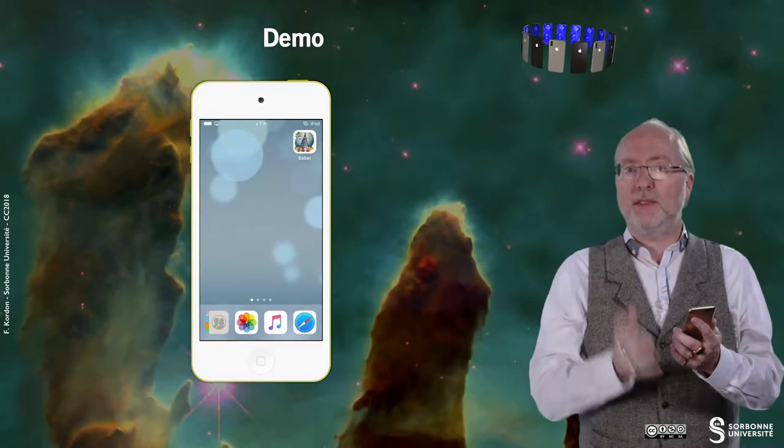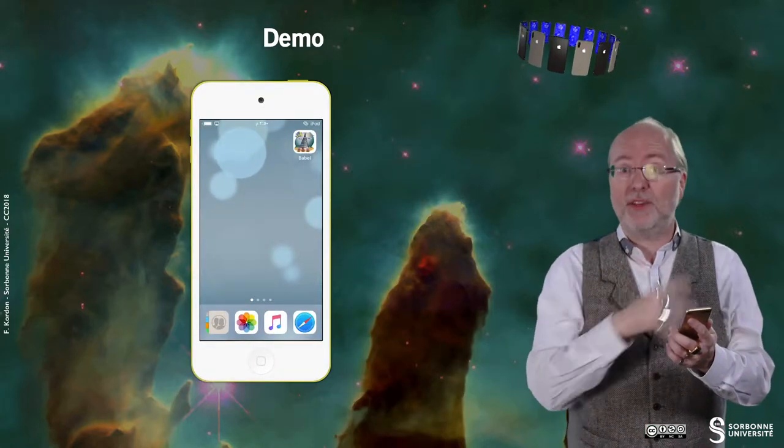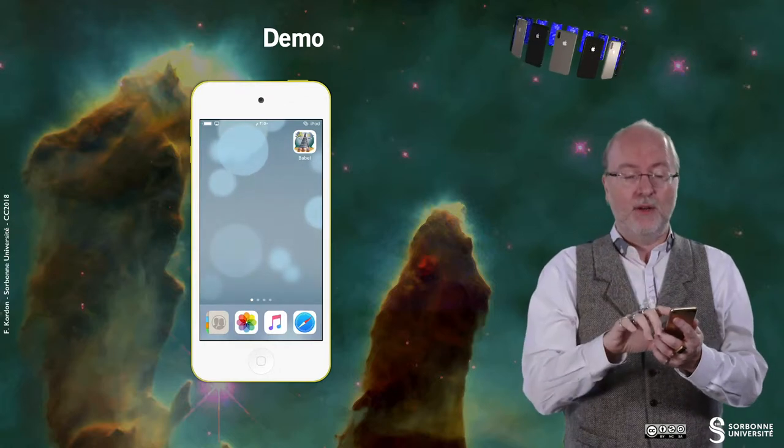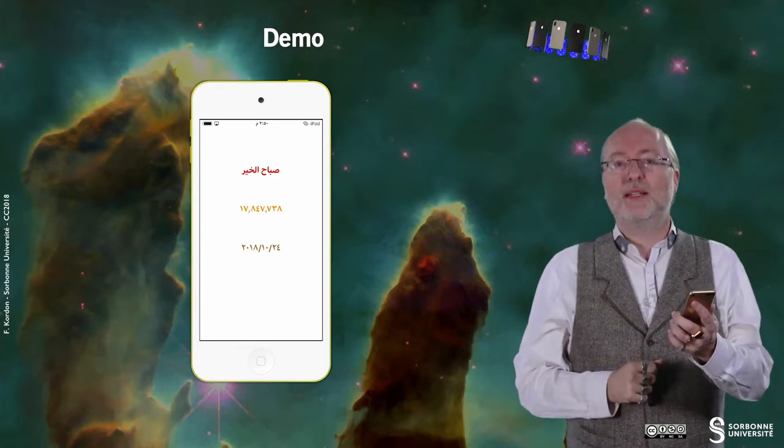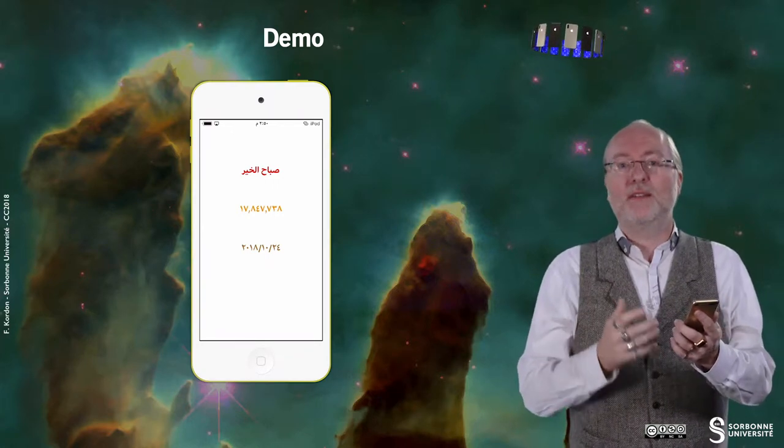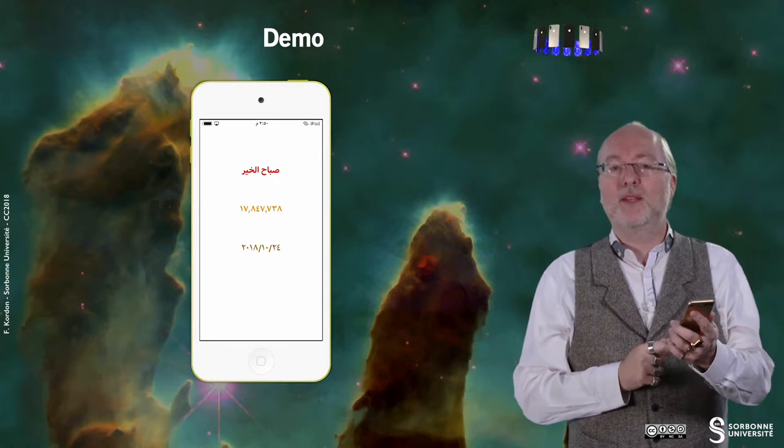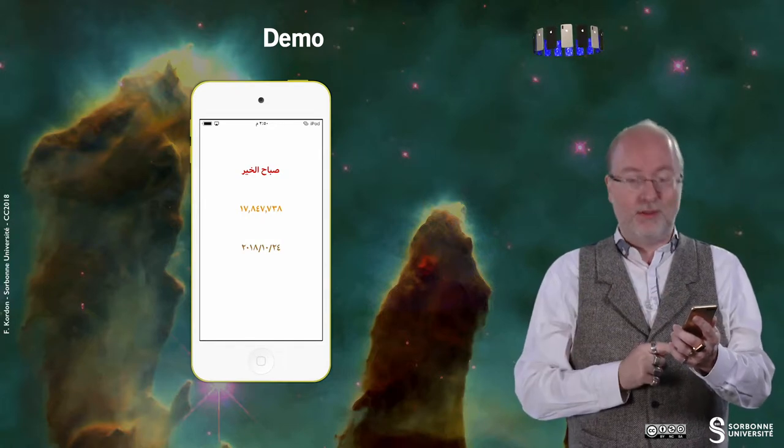Let's now run this application in Arabic. I set up my device in Arabic, and you see that everything is in the other side because they write from right to left. And so you see here that you display Salaam Alaikum, then you have a number, and below you have the date.